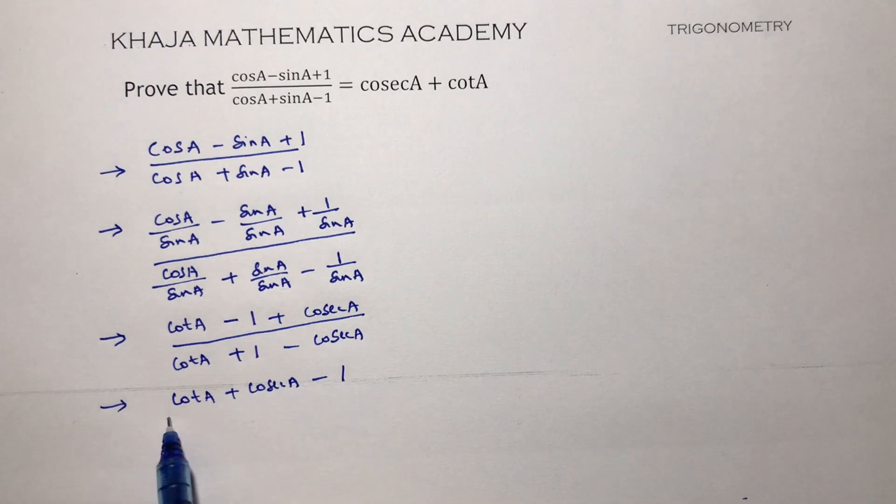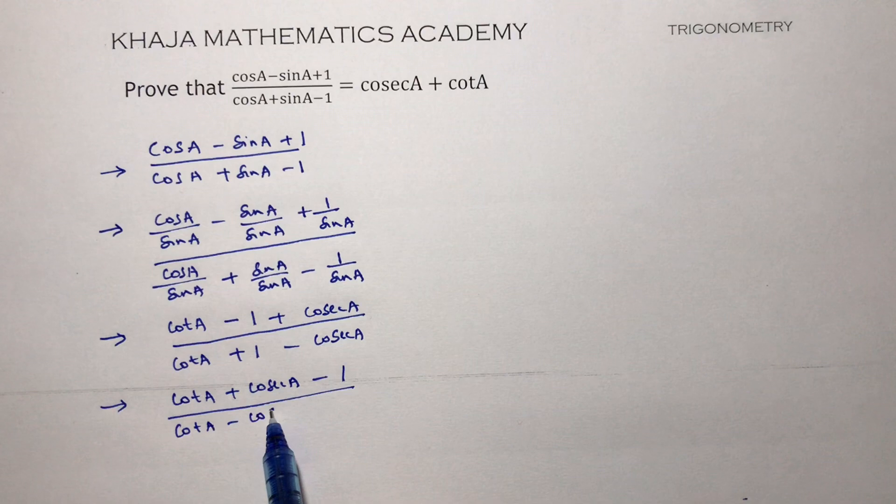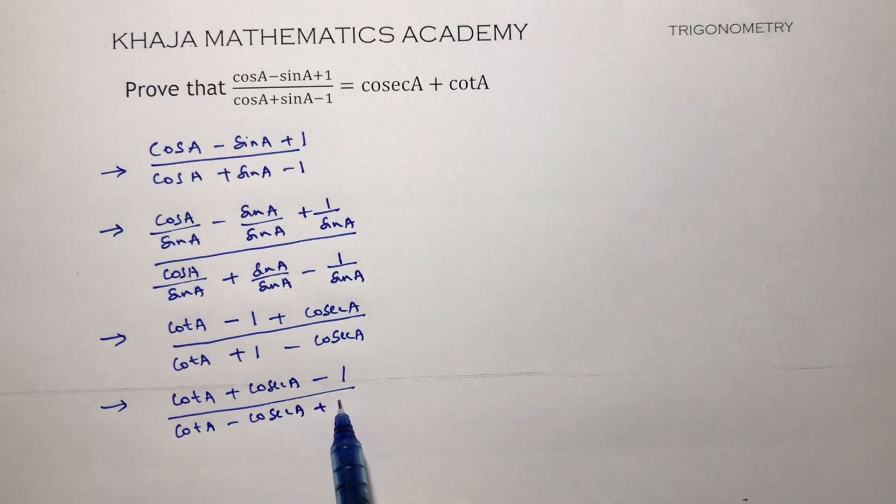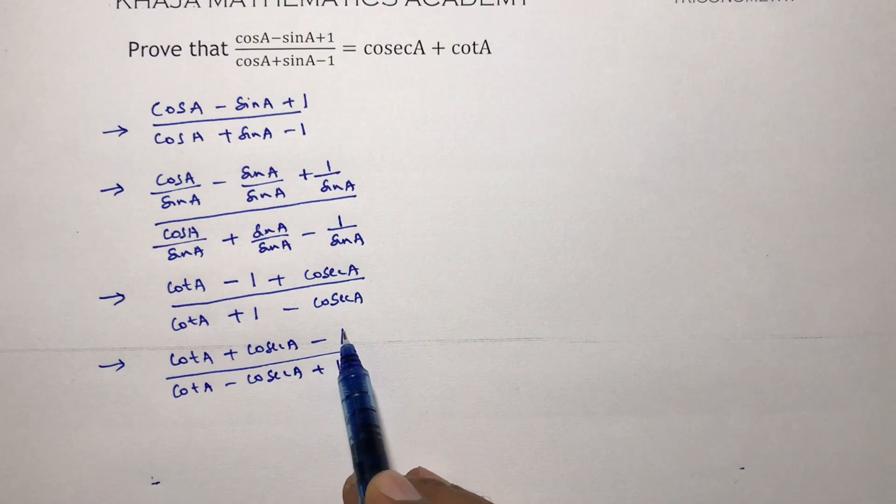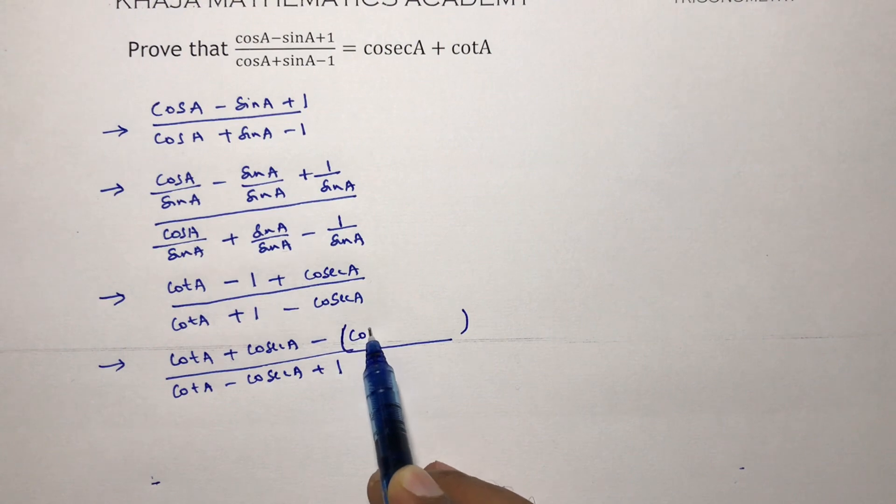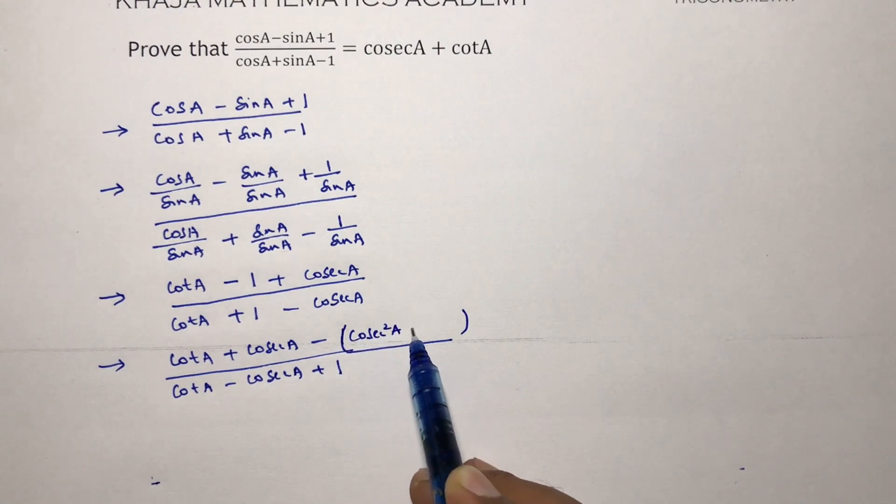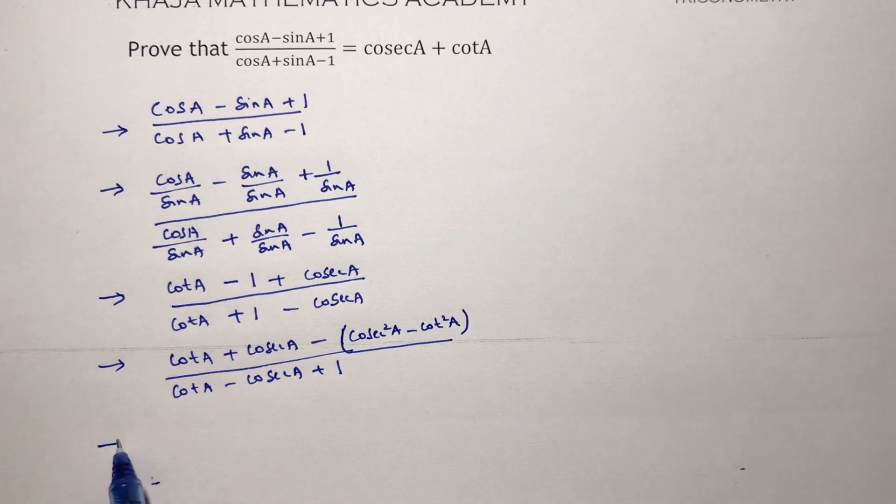So here in the numerator you can write it as cosec² A - cot² A. cosec² A - cot² A. Now if you will see this, cot A + cosec A - 1, it is in the form of a² - b².